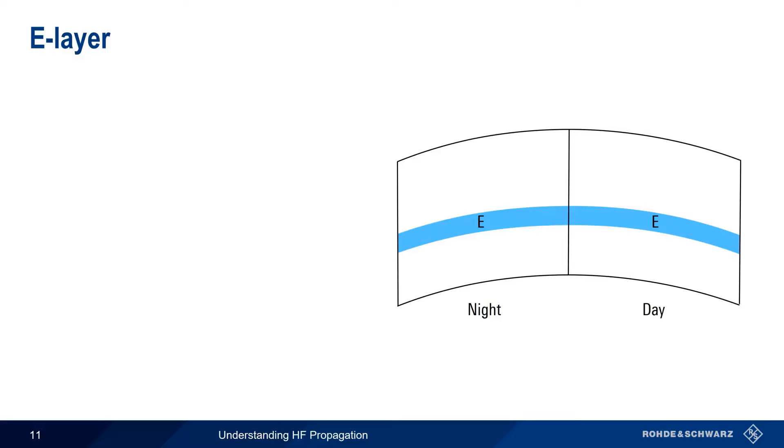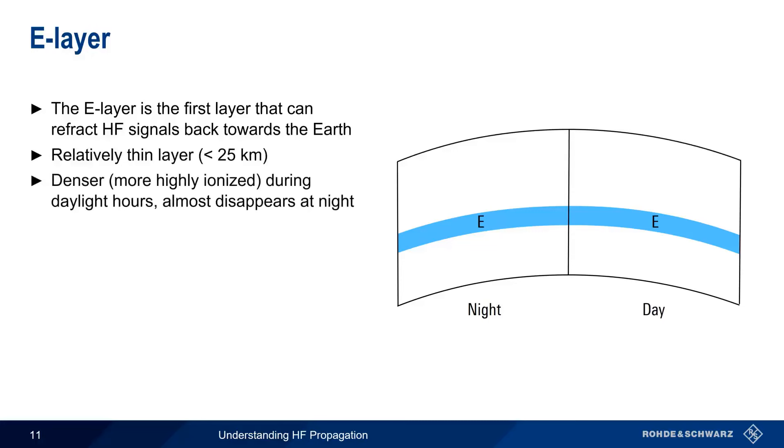The next highest layer, the E layer, is the lowest layer of the ionosphere that can refract HF signals back towards the Earth, and is the lowest layer that supports skywave propagation. Compared to the other layers, it's relatively thin, usually around 10 kilometers or so. The E layer is much more dense, that is, ionized, during the day. But unlike the D layer, it doesn't completely disappear at night.